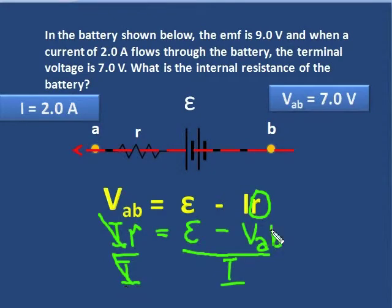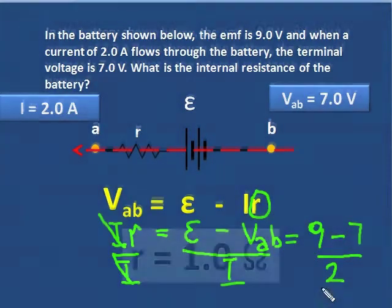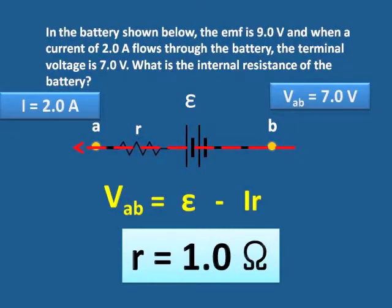So now I put the numbers in, and they're all found in that question. E is 9 volts. The V_AB is 7—that's the terminal voltage. And there's the current of 2. And you can look at this and do it in your head: 9 minus 7 is 2, and you get 1 ohm.